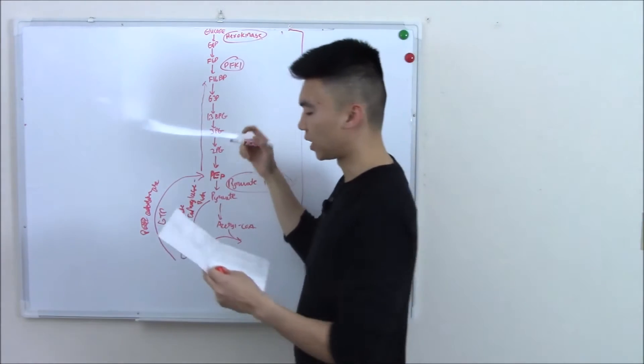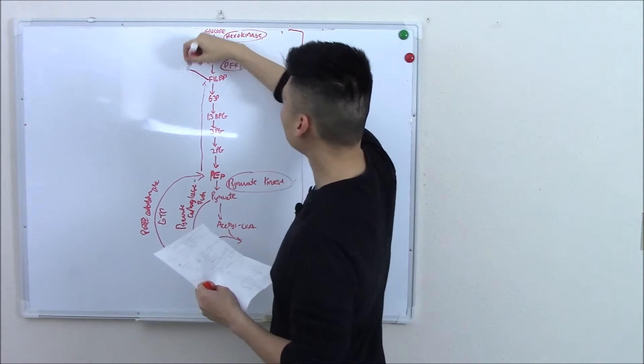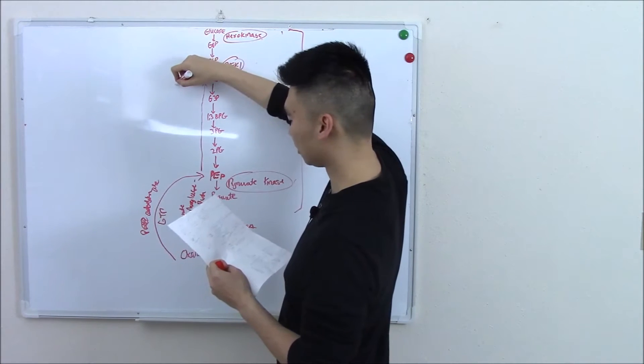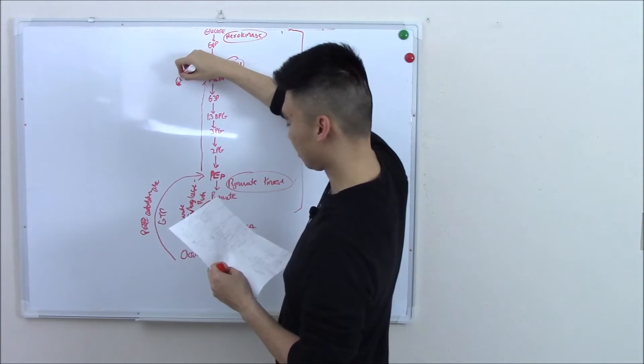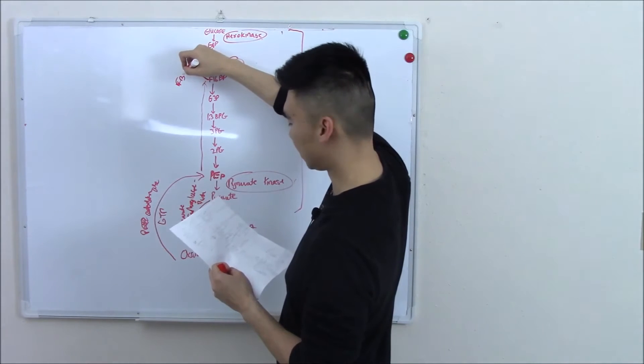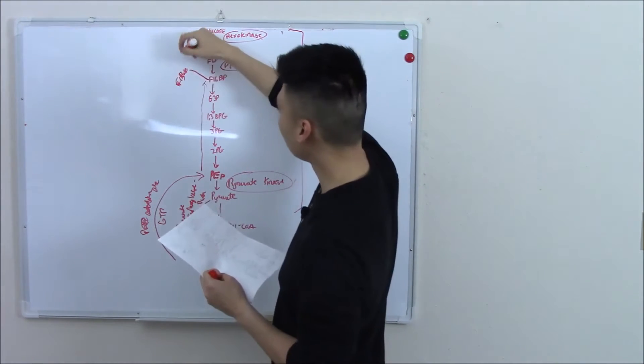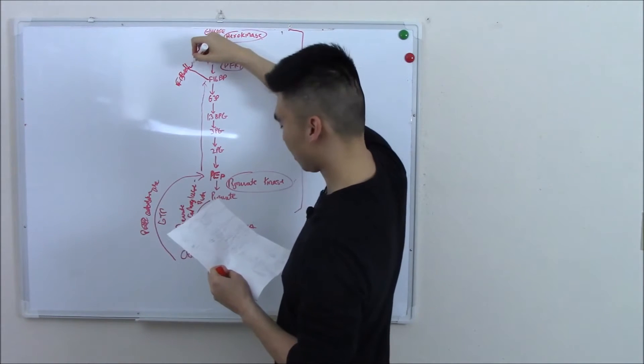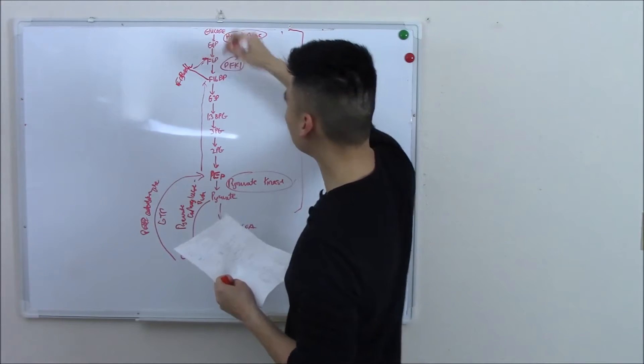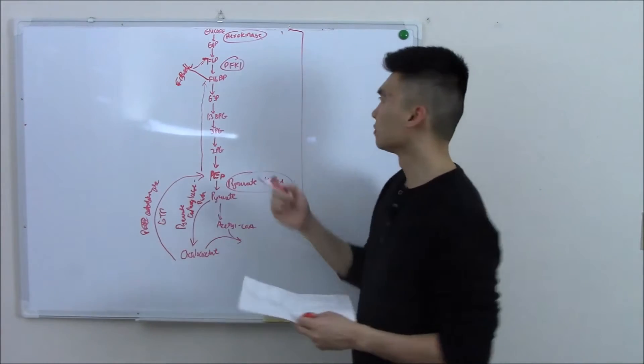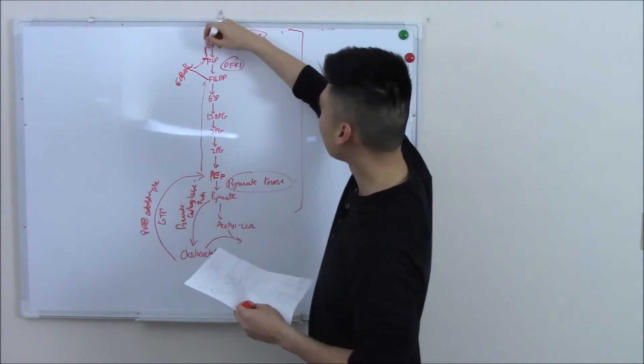PFK1. Well, it has a buddy that can bypass this - it's called fructose bisphosphatase 1 and 2. And that allows it to move to fructose 6-phosphate.